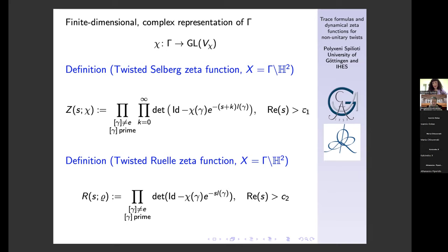I would like to mention that it is not trivial to obtain the domain of convergence and to write explicitly c₁ and c₂. These constants depend on the representation and are related to the so-called critical exponents. Proving this requires some facts from geometric group theory, in particular a bi-Lipschitz condition between the word metric on the lattice and the hyperbolic metric. So it is not trivial.